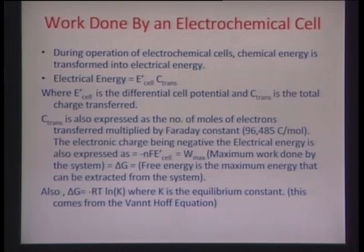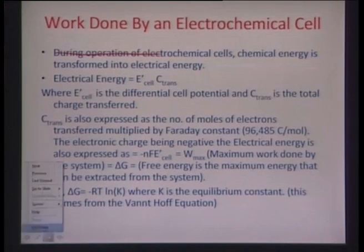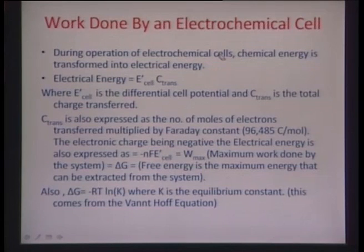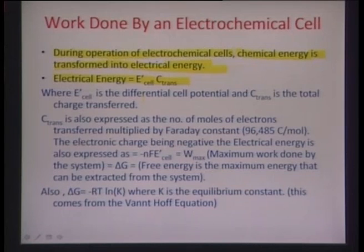There is work which the cell does in order to transfer electrons from one electrode to the other. The total electrical energy spent during this operation is E′_cell × C_trans, where C_trans is the total charge transferred from one electrode to another, and E′_cell is the differential cell potential between both electrodes.